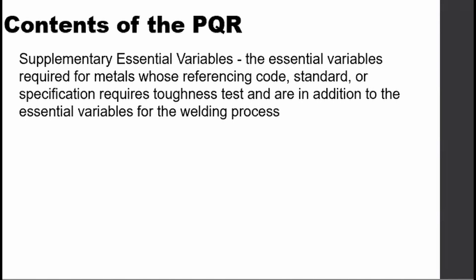Supplementary essential variables are those required for metals whose referencing code, standard, or specification requires toughness testing, and are in addition to the essential variables for the welding process. If the test does not require toughness tests such as Charpy or Izod, then these variables will not be essential.